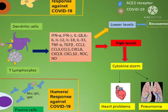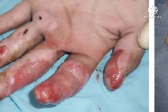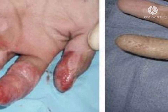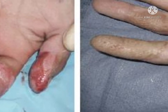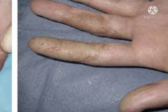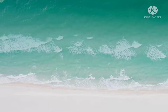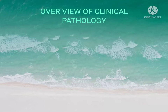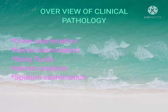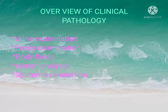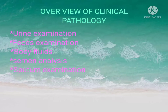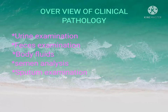Immunopathology focuses on the immune response. Radiation pathology is a branch combining radiology and pathology, dealing with the effects of radiation on cells. Clinical pathology covers urine examination, diagnosis, body fluids analysis, semen analysis, sputum examination, and determining the final cause of disease.